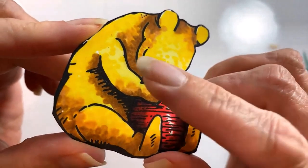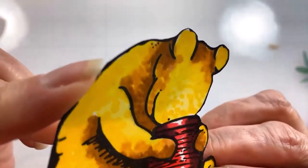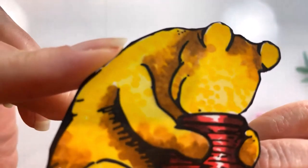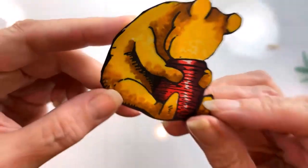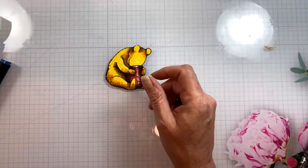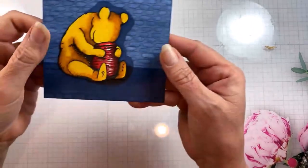Here up close you can see the highlight, you can see the little teddy bear texture all over this sweet bear, and you can see the beautiful shadow that that blue brings.